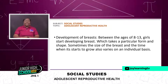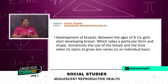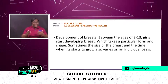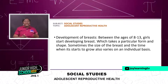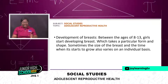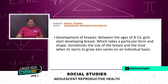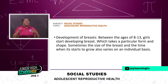Now let's look at the development of breasts. Between the ages of 8 and 13, girls start developing breasts. Actually, it's not all — not every girl starts from 8 years, but of late majority start from 8 years. The world-acceptable transition is 10 years. The size of the breasts and the time when it starts to grow also varies on an individual basis.